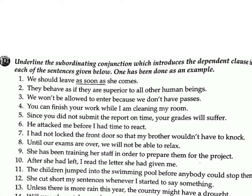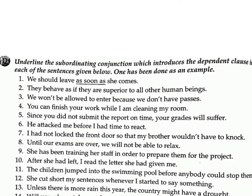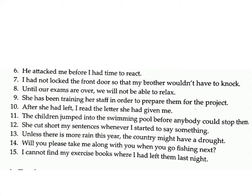Exercise D: Underline the subordinating conjunction which introduces the dependent clause in each of the sentences given below. One has been done as an example. One: 'We should leave as soon as she comes.' Answer: as soon as. Two: 'They behave as if they are superior to all other human beings.' Answer: as if. Three: 'We won't be allowed to enter because we don't have passes.' Answer: because. Four: 'You can finish your work while I am cleaning my room.' Answer: while. Five: 'Since you did not submit the report on time, your grades will suffer.' Answer: since.